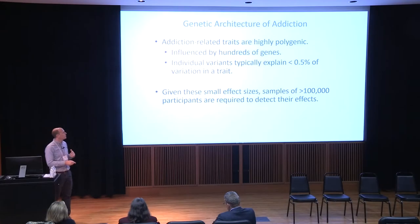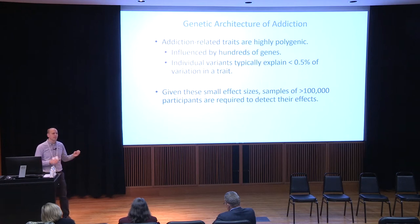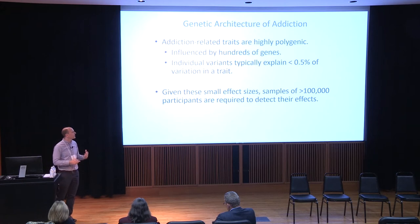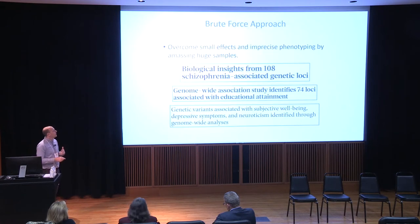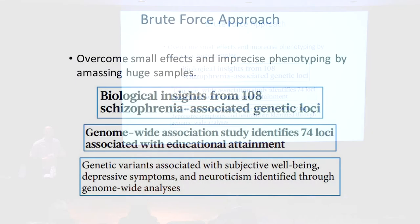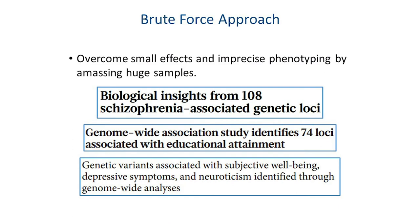When we combine these tiny effects with the number of variants we're examining, to find anything with a genome-wide significant effect we honestly need sample sizes upwards of a hundred thousand people, sometimes even larger. Obviously no one person could collect that many samples alone, so these are huge consortia-driven efforts in the United States and around the world.